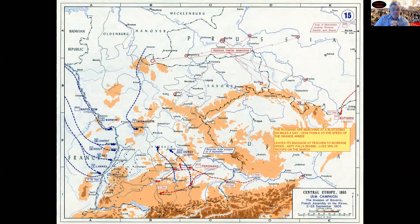Here's another West Point map, which everyone loves. You can see all the corps, because of the exquisite timing and planning of Napoleon, approaching the Rhine River at exactly the same moment — or very close — with Bernadotte closing up from the north. You can see here the Bavarians moving out, getting out of the Austrians' way. On the far right, Kutuzov is arriving on 25 September with the first of the Russians.